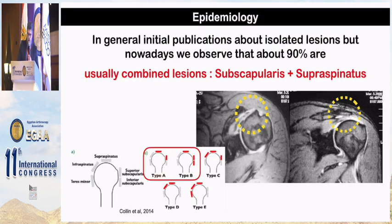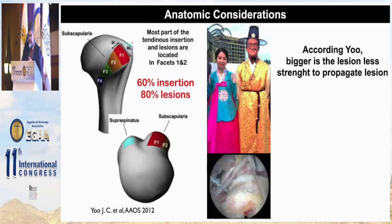In general, there were initial publications about isolated lesions, but nowadays we observe that about 90% are usually combined lesions — anterosuperior type 1B — especially involving the subscapularis and supraspinatus tendon.